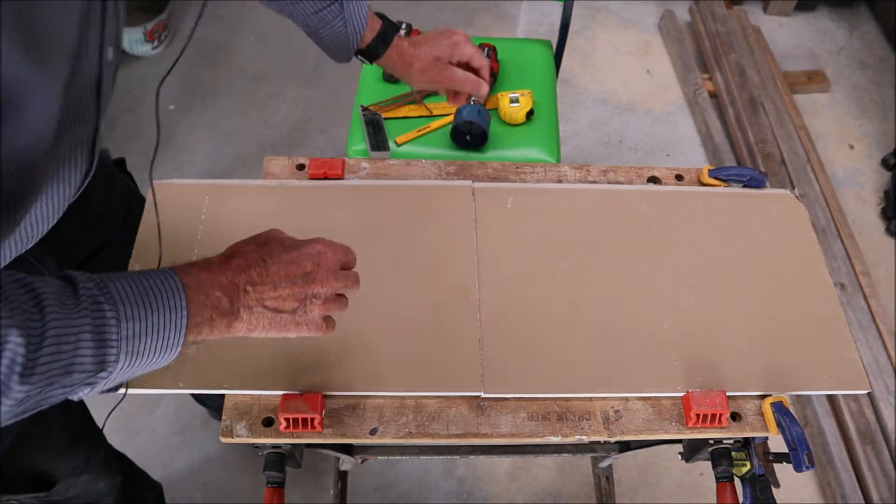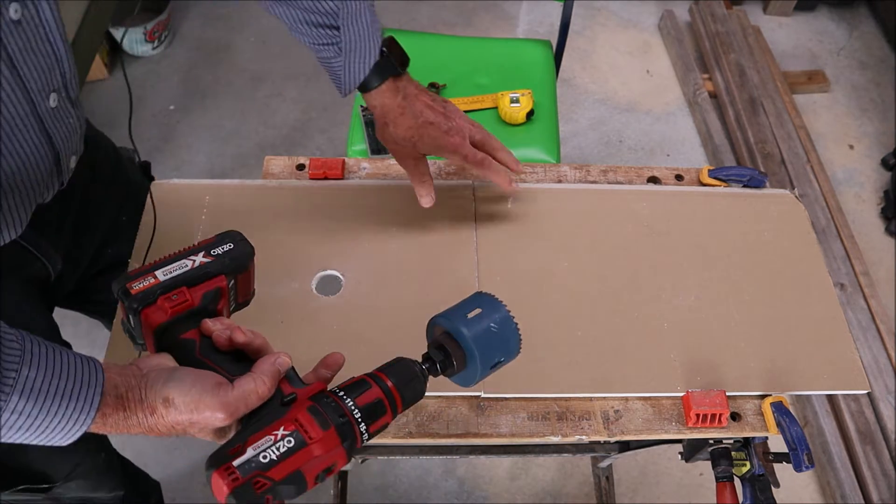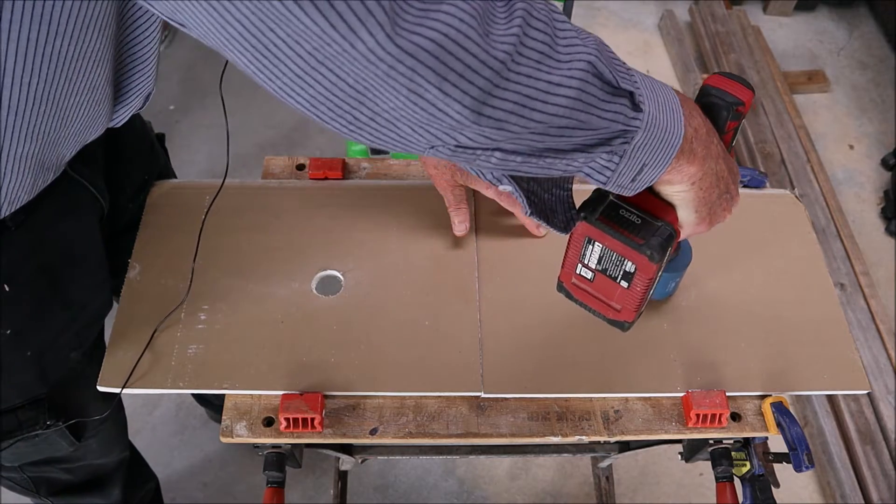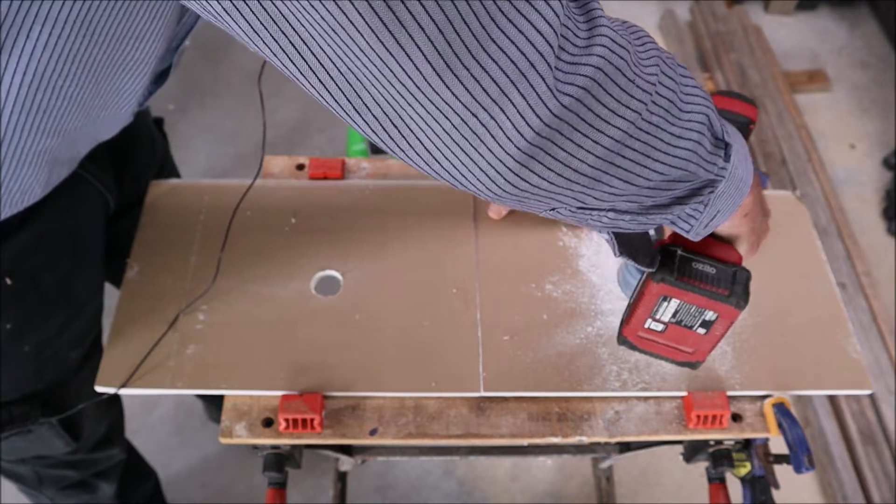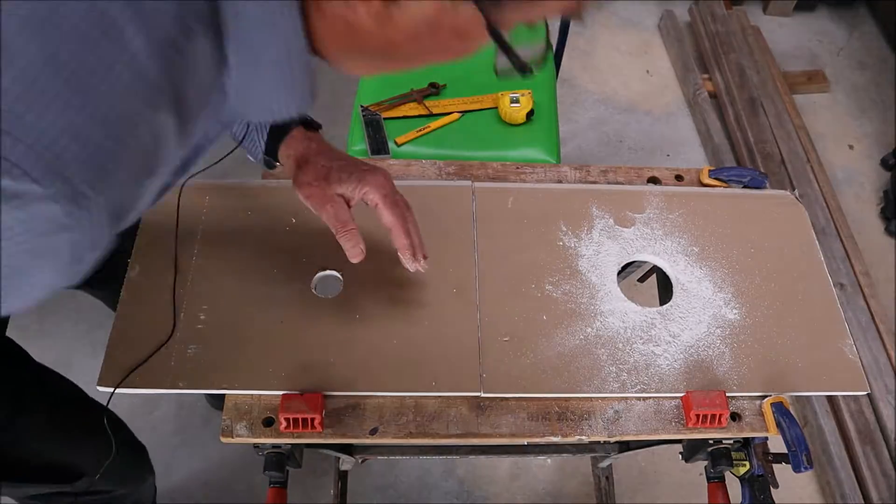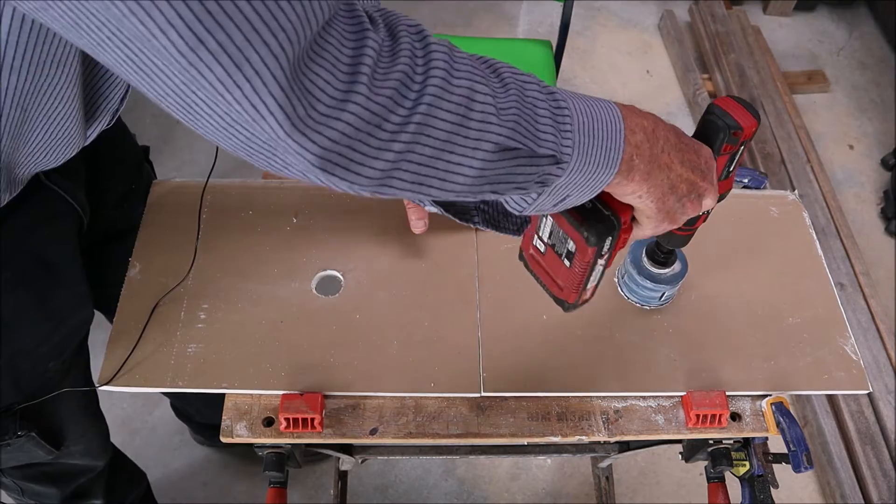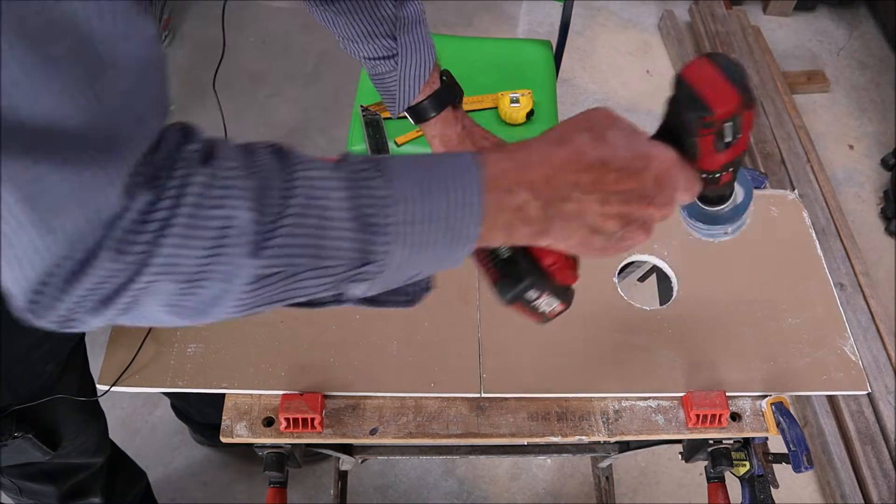Now the first thing we have to do is cut a template out of a scrap piece of material, so we'll do that first. We've got to use the new hole saw that we're trying to drill with and just drill a nice neat hole.